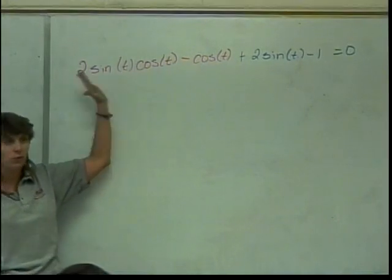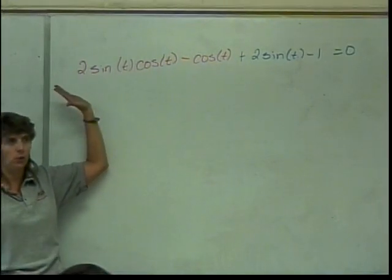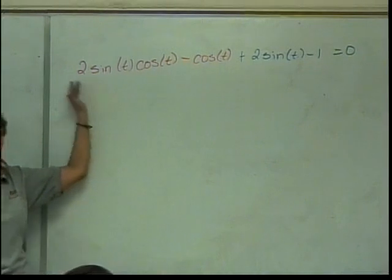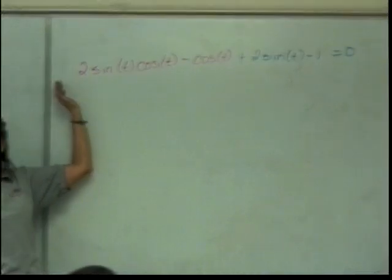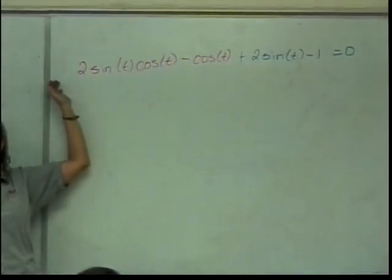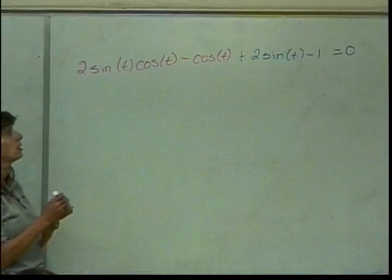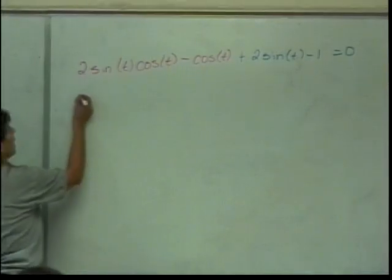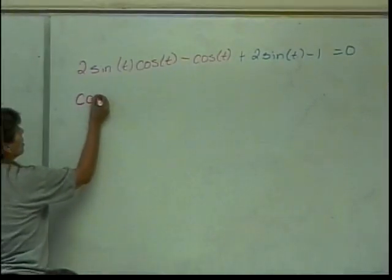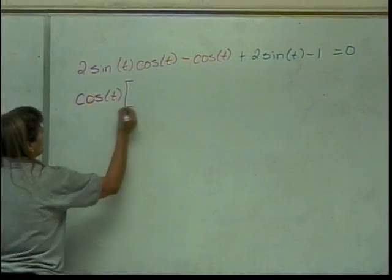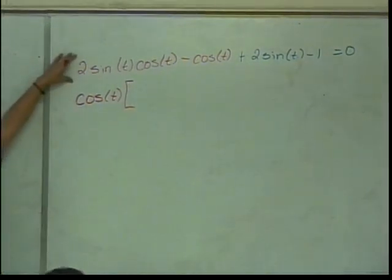This is likely the way you're going to be able to factor the cubic. The red part has something in common. What do both red pieces have in them? A cosine of t. So I can factor that out of the red pieces. When I factor it out of the first piece, we have 2 sine of t, cosine of t.